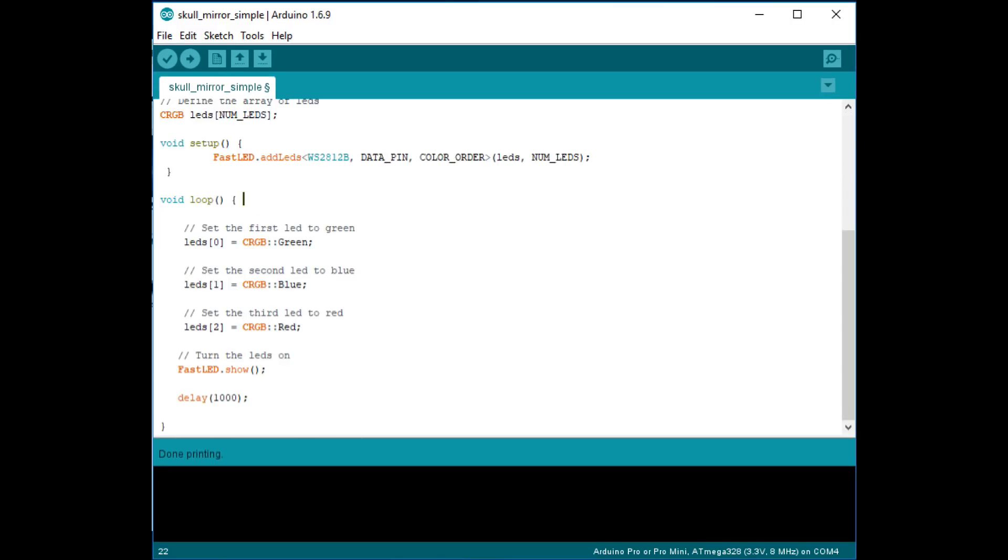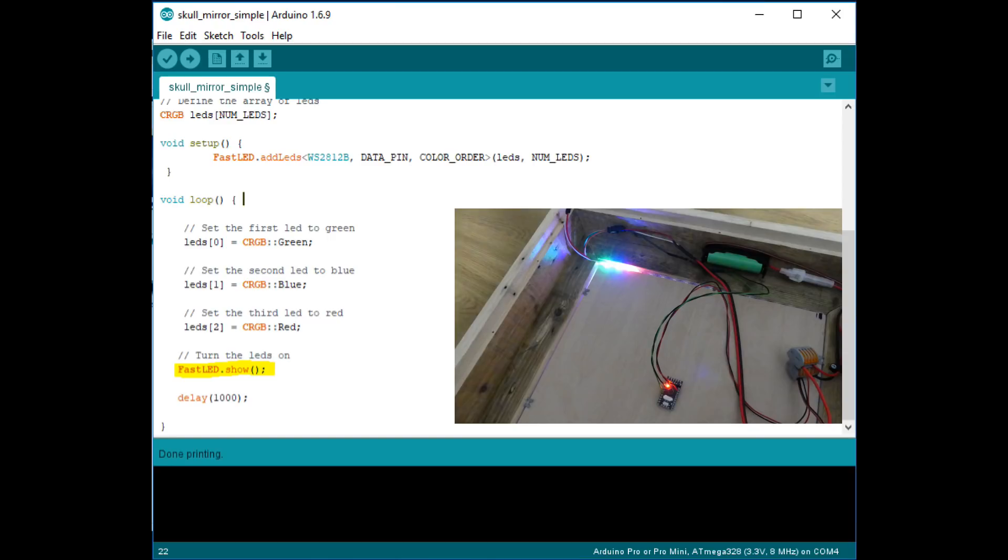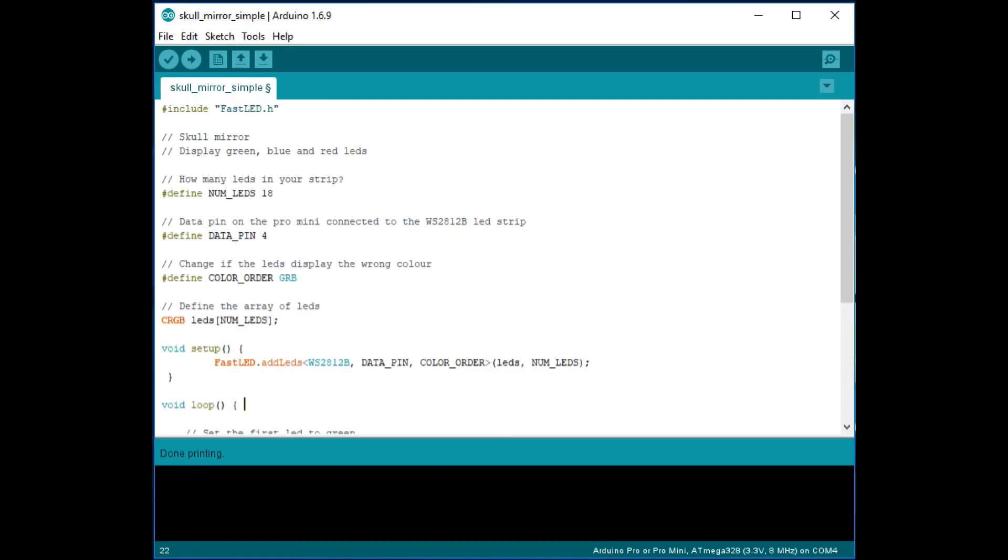Displaying colors on the LED strip is a two stage process. First we set the values in the LED array. And then tell the library to display the data on the LED strip. So in this case we set the first LED to green. The second to blue. And the third to red. And then tell the library to show the colors on the LED strip. If the LEDs display the wrong colors then we should go back and change the color order constant.